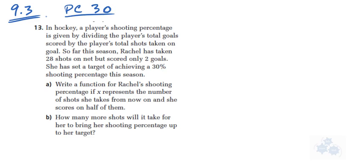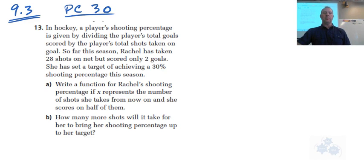All right, so in question number 13, what we're asked is the following. In hockey, a player's shooting percentage is given by dividing the player's total goals by the total shots. So dividing the total goals by the total shots, that's the shooting percentage.